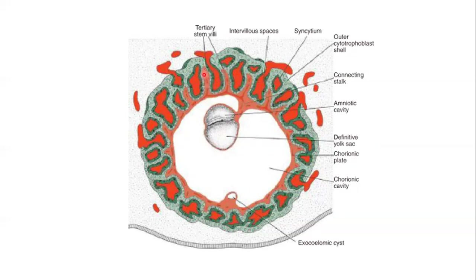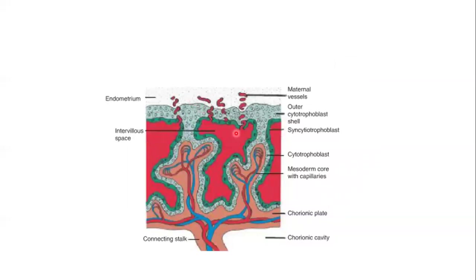The tertiary villi are filled with blood vessels. The vessels in the villi and the vessels in the chorionic plate will start communicating with each other. You can see the intervillous spaces, the sinusoidal blood, the villi vessels, the chorionic plate, the connecting stalk, and the chorionic villi all coming together in this picture.